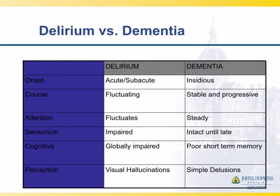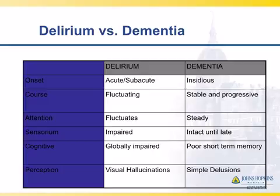Differentiating a delirium from a dementia: deliriums tend to be acute to subacute. The course of delirium is typically fluctuating — someone will call you saying the person's really delirious, and you come and they're okay, or they say it's only mild and you see it's quite severe. The attention will fluctuate; they'll be easily distracted. The sensorium will be impaired — they may hallucinate, they may confabulate. All aspects of cognitive function will be globally impaired, so when you do your mental status exam, everything might be out along with attention.